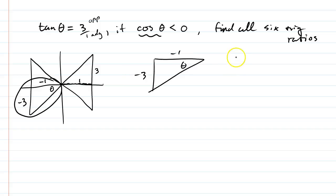Okay, using Pythagorean theorem, we're going to do negative 1 squared plus negative 3 squared equals the hypotenuse squared. This is 1 plus 9. This is going to be the square root of 10, and hypotenuse is always positive. It's like the distance from 0.